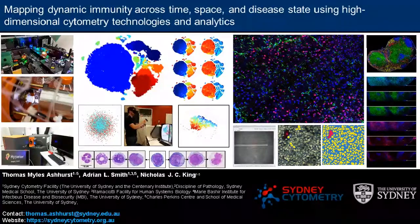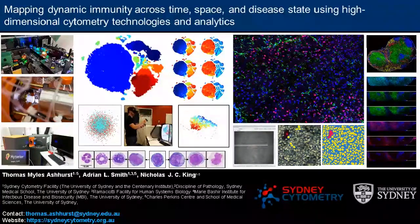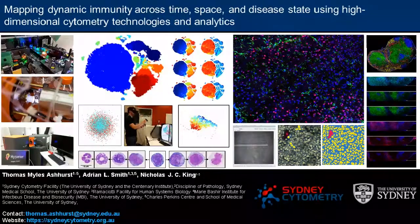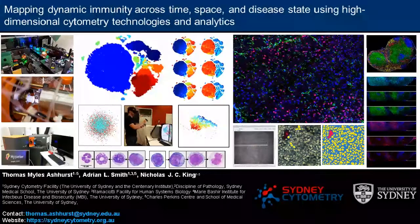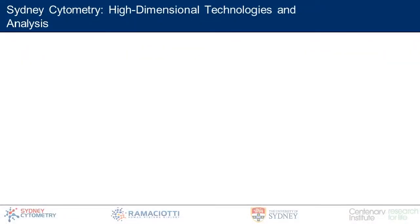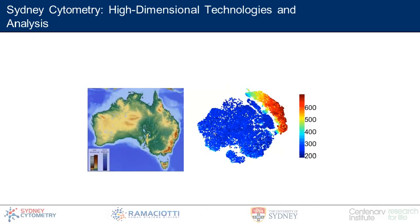Thanks very much for that kind introduction, I really appreciate it. What I'd like to talk about today is the process by which we can map the immune system in a dynamic way — the way the immune system deals with threats to our health in real-time. I am from Australia, and I work with the Sydney Cytometry Facility, which is designed to bring high-dimensional single-cell technologies into the hands of our users.